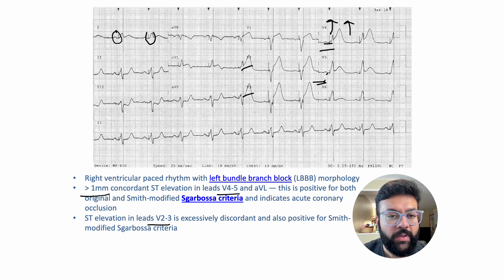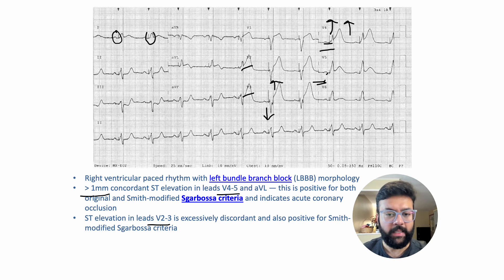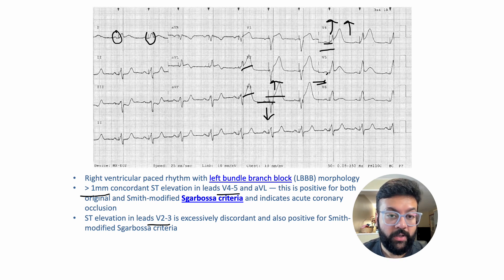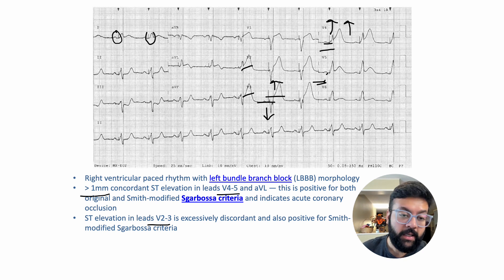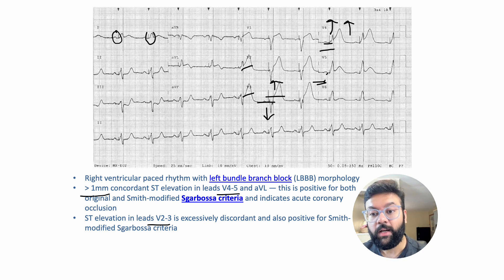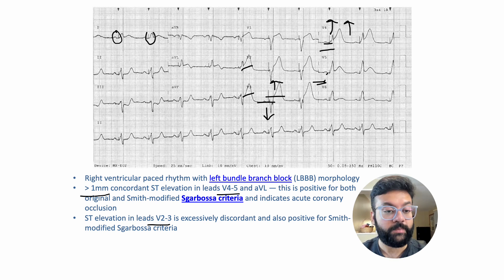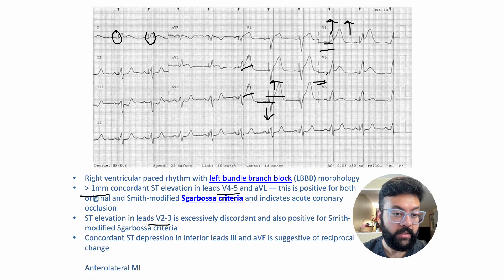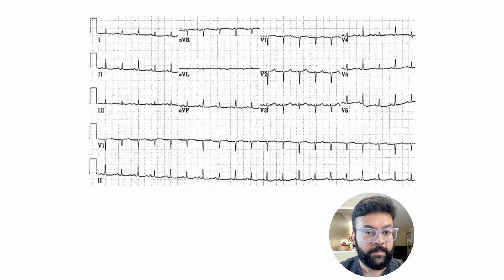In V2 and V3, the QRS complex and the ST changes are on opposite sides — that is discordant — and this is more than five millimeters from the isoelectric line. More than five millimeters of discordant ST depression is also diagnostic of myocardial infarction, specifically STEMI. This is anterior-lateral myocardial infarction.